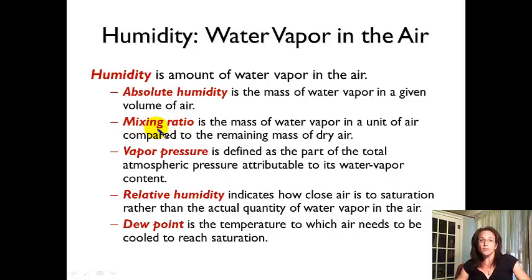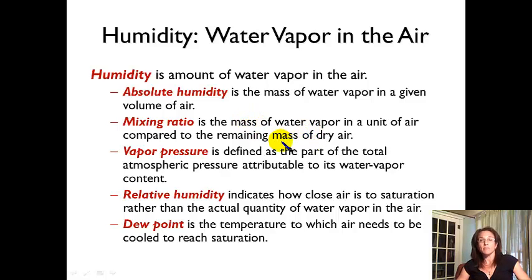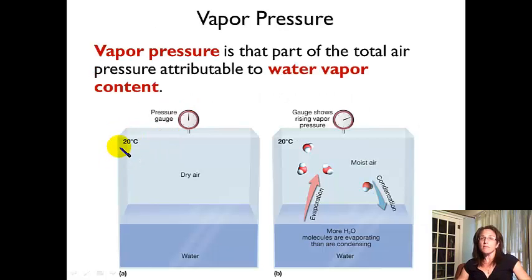Mixing ratio is very similar, except instead of per unit volume, we're expressing the mass of water in a unit of air compared to the remaining mass of dry air. So we have so many grams of water per so many grams of dry air — grams per grams, or kilograms per kilogram — mass per unit mass.